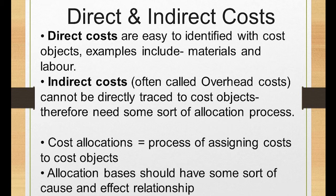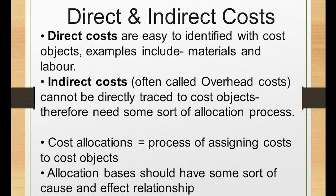Whether in real life or in exams, direct costs are easy to deal with. The problem is always the overheads. Especially in the new era of manufacturing where most production is automated, overheads make a bigger proportion of total cost — maybe 60 to 80%. Because of this bigger proportion, if you allocate them incorrectly, the total cost calculated for different products would be incorrect. So if you're dealing with something more important, you need to be more careful.